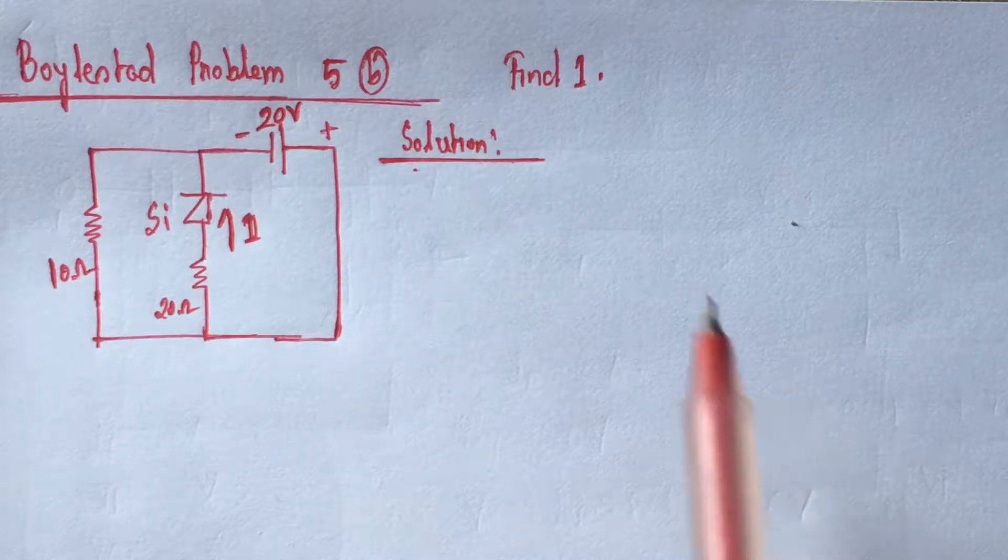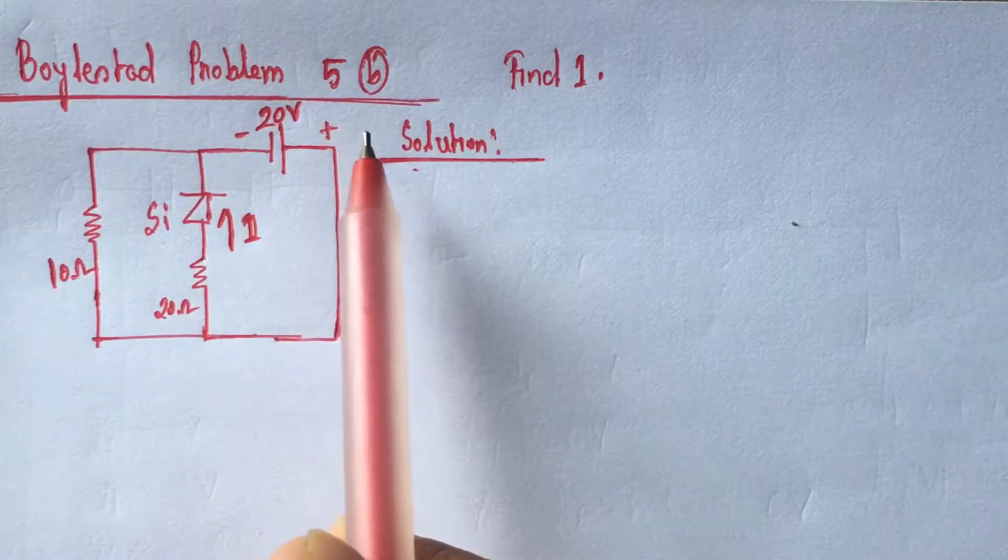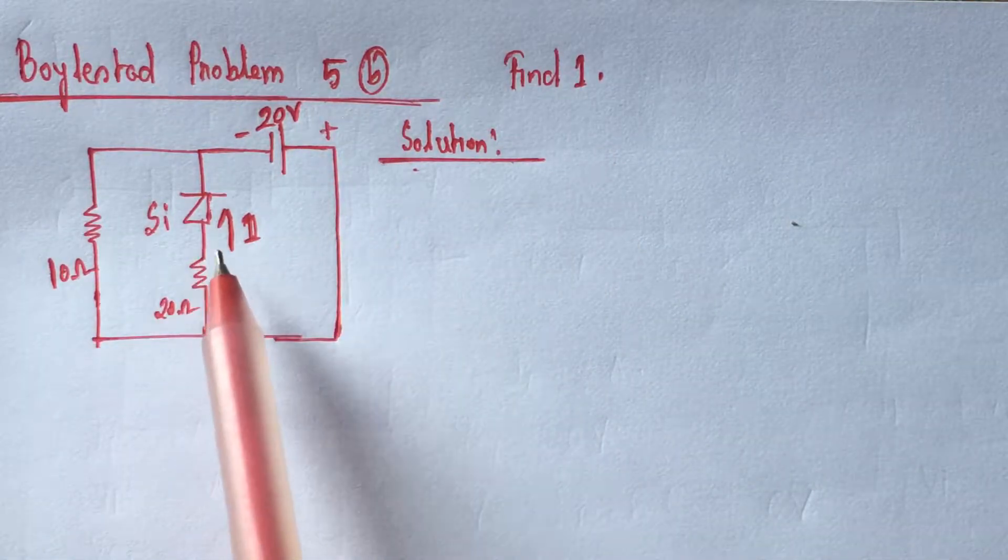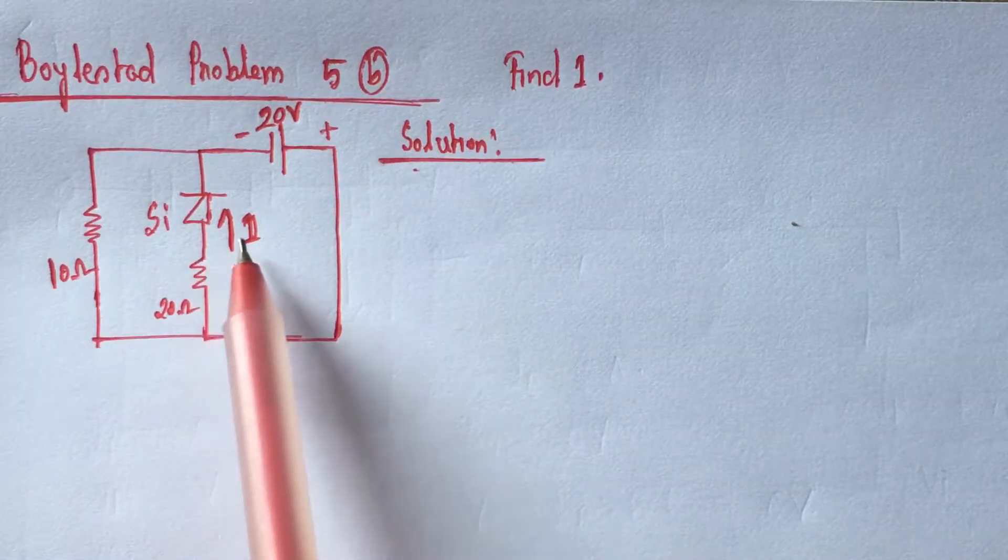Hi viewers, today we will solve problem 5B from Boyle State. This is a diode related problem. Here we have to identify the current flowing through the silicon diode.